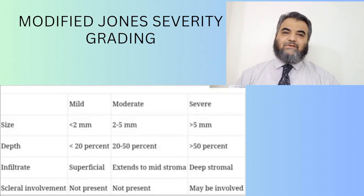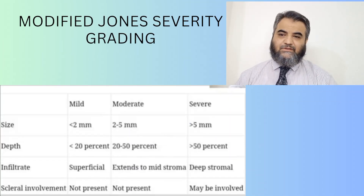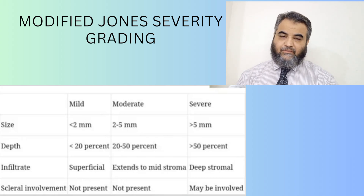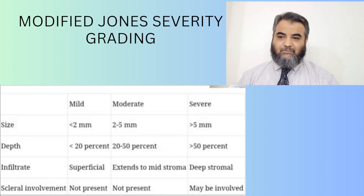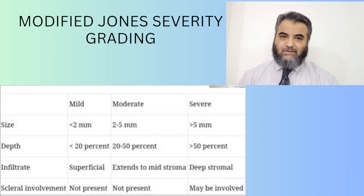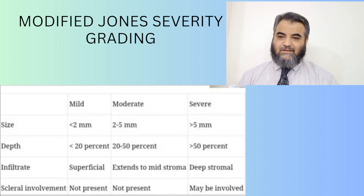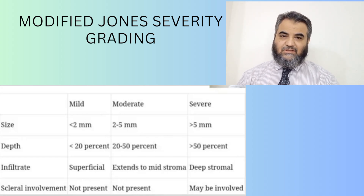There are usually three grades: mild, moderate, and severe. If we fit the criteria of the modified Jones severity grading, you can see the size is more than five millimeters, the depth is such that the cornea is just about to perforate centrally, and there are deep stromal infiltrates — it is a full-fledged corneal abscess. The sclera is just about to be involved; in fact, with ciliary congestion 360 degrees it is severe infective keratitis.